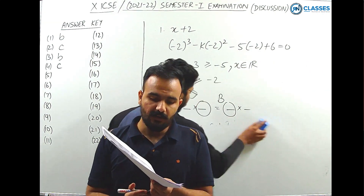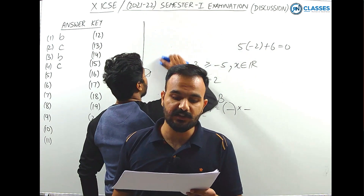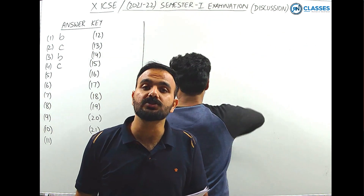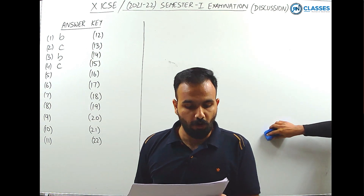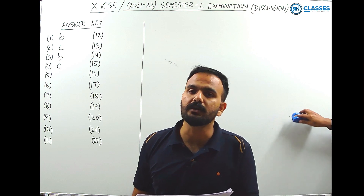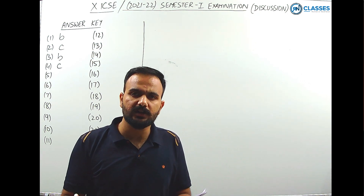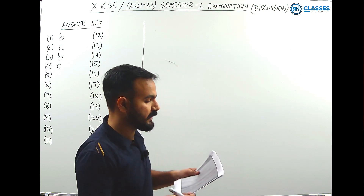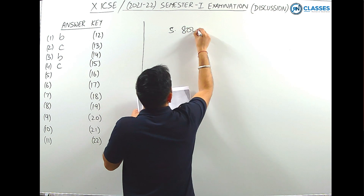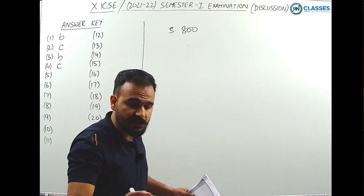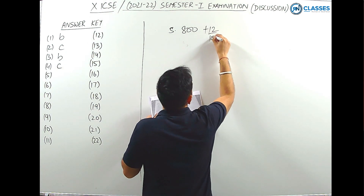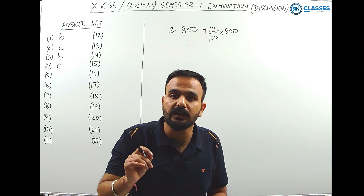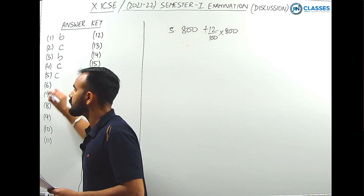Question 5: the selling price of a shirt excluding GST is ₹800. If the rate of GST is 12%, then the total price is — we need cost including GST. The price excluding GST is ₹800, plus 12% of 800. Calculating: 800 + 96 = ₹896. Option C is the correct answer.